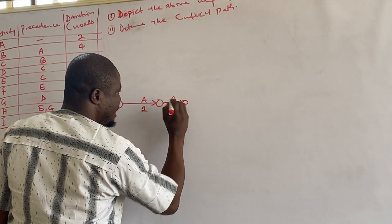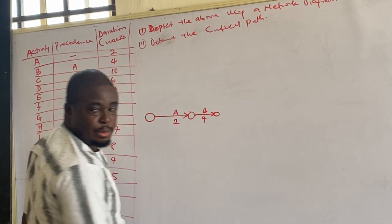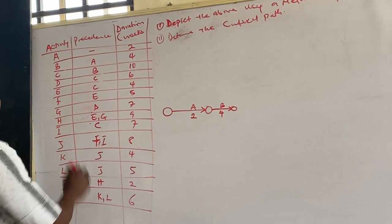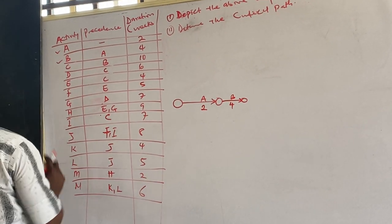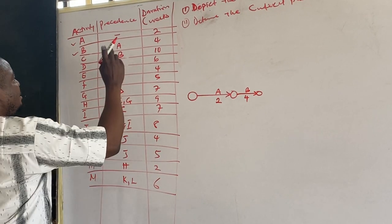Please, another B. How many weeks? Four. You are done with this? The next one is C. It is preceding D.